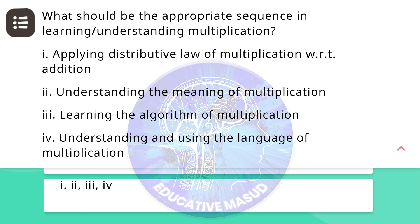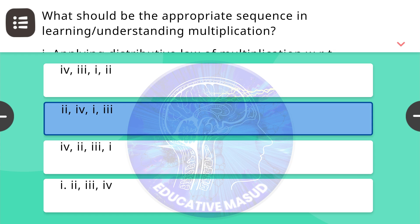Next question: what should be the appropriate sequence in learning and understanding multiplication? Number one: applying distributive law of multiplication with respect to addition. Number two: understanding the meaning of multiplication. Number three: learning the algorithm of multiplication. Number four: understanding and using the linguistics of multiplication. Correct answer is two, four, one, three.